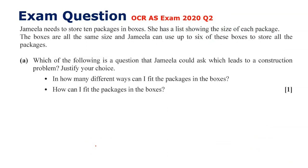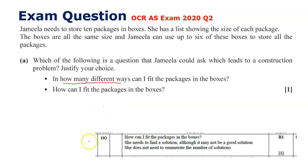Another exam question: Jamila needs to store 10 packages in boxes of the same size, using up to six boxes. Which question leads to a construction problem? 'In how many different ways can I fit the packages in the boxes?' — as soon as you see 'how many different ways,' that's enumeration. So the construction question must be: 'How can I fit the packages in the boxes?' — can I construct a solution? That's the correct answer. So we've covered existence, construction, enumeration, optimization, and a bit of set theory.